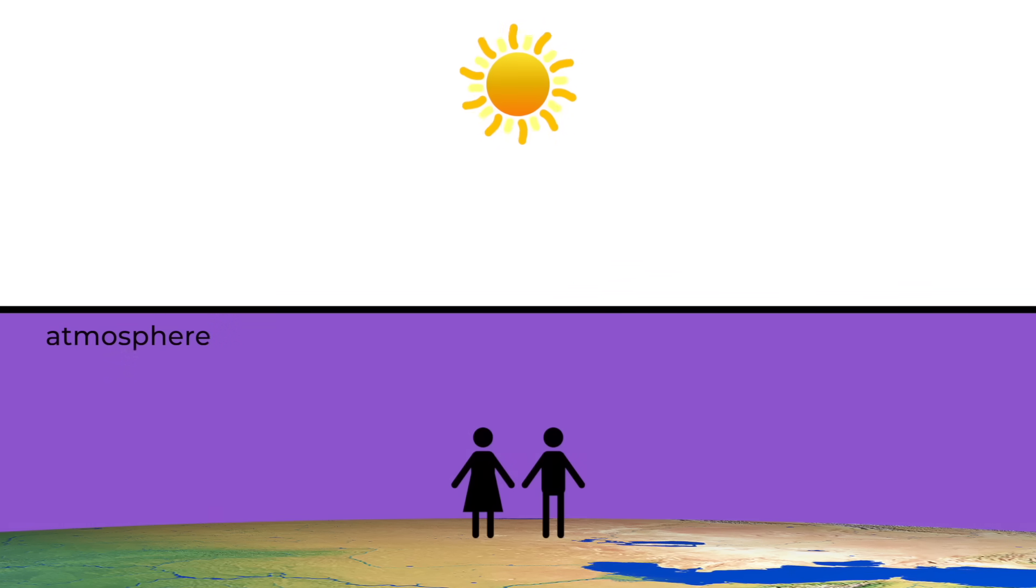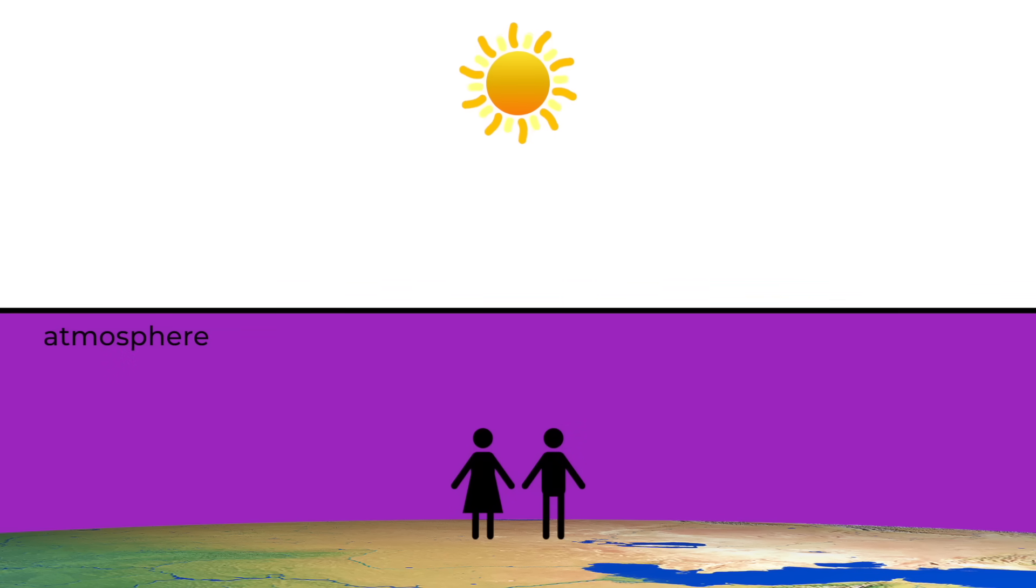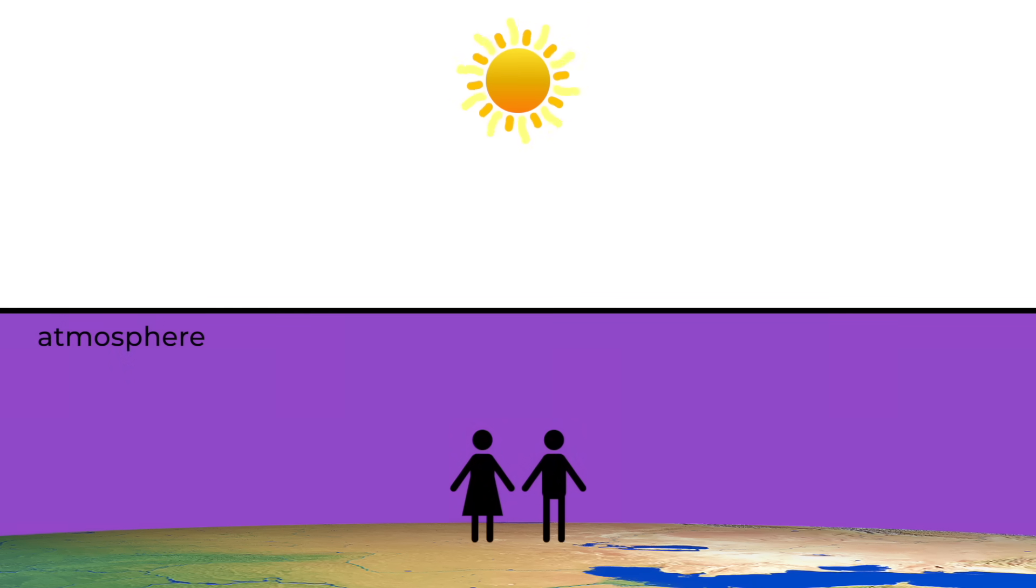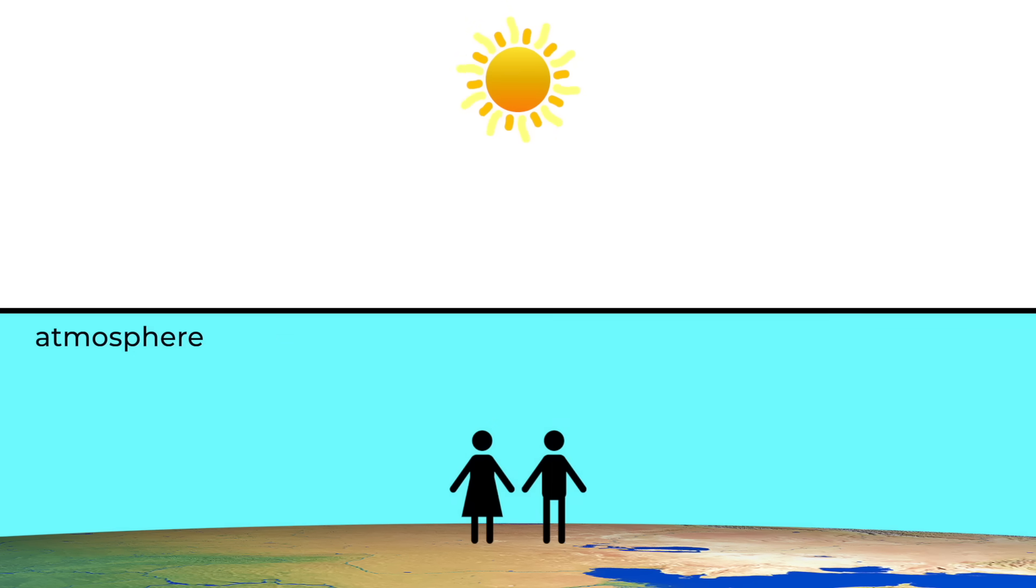So technically, the sky should be more on the purple side if we had perfect eyes, but we don't. Since we don't see violet well, that's why the sky is blue. And of course, because there are no clouds out.